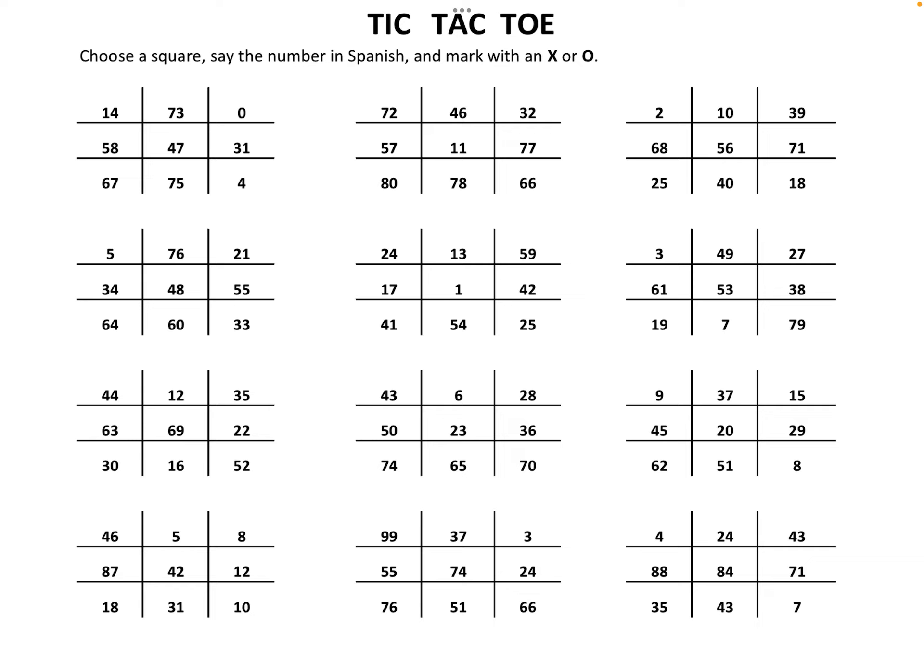Then my partner goes — let's say they want to go in the bottom right corner, and instead of saying four, they accidentally say veinte cuatro, 24. Just correct them politely and say, oh, I think it's cuatro, and then they can put an O there.